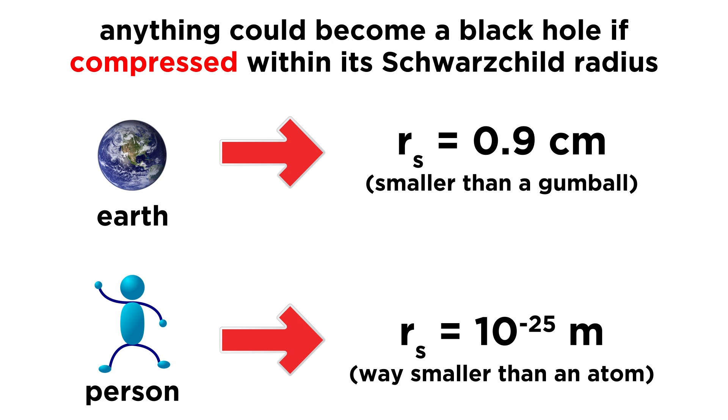Even a person, like you or me, could become a black hole, but we would have to be compressed into a sphere with a radius of 10 to the negative 25 meters, which is as much smaller than an atom as an atom is smaller than a person.